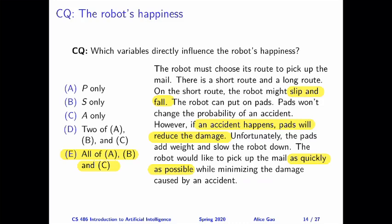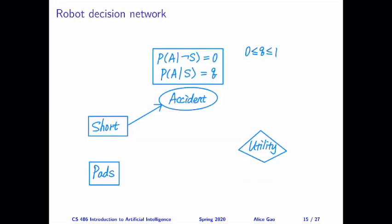Let's go to the next slide. I've copied the partial decision network onto this slide. To show that all three nodes influence the robot's happiness, we connect each node to the utility node. These three edges indicate that all three nodes will influence the robot's utility in some way.